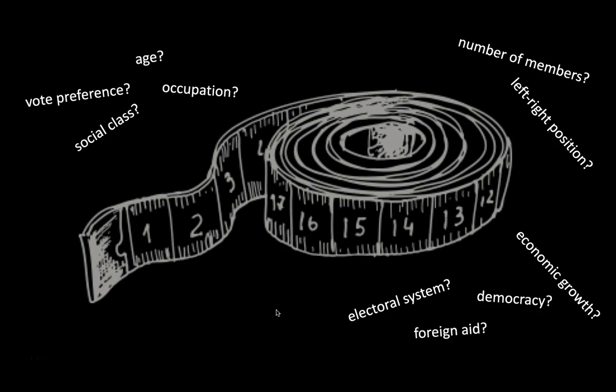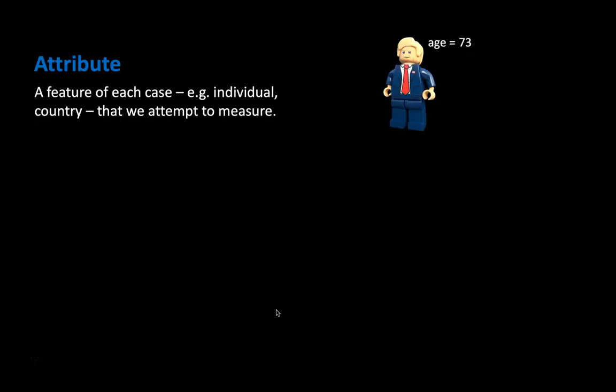In each of those cases we have an idea of a particular attribute — a particular feature of a country, a party, or an individual — that we want to observe and measure across a large number of individuals. So an attribute is a feature of a respondent, party, or country that we would like to observe, and then we make measures. So I have now introduced the concept of an attribute.